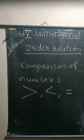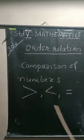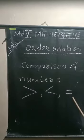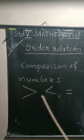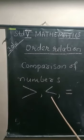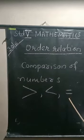We have already learnt in the previous classes how to compare numbers. And we use these symbols for comparing numbers: greater than, less than, equal to.